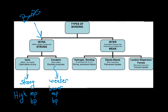Intramolecular forces in general are stronger bond types than intermolecular. Intermolecular forces are what we call IMFs, and there are three types we'll be talking about: London dispersion forces, which are the weakest; dipole-dipole forces; and hydrogen bonding, which is an IMF, not a true bond. Of the IMFs, hydrogen bonding is the strongest, but still weaker than the intramolecular forces.